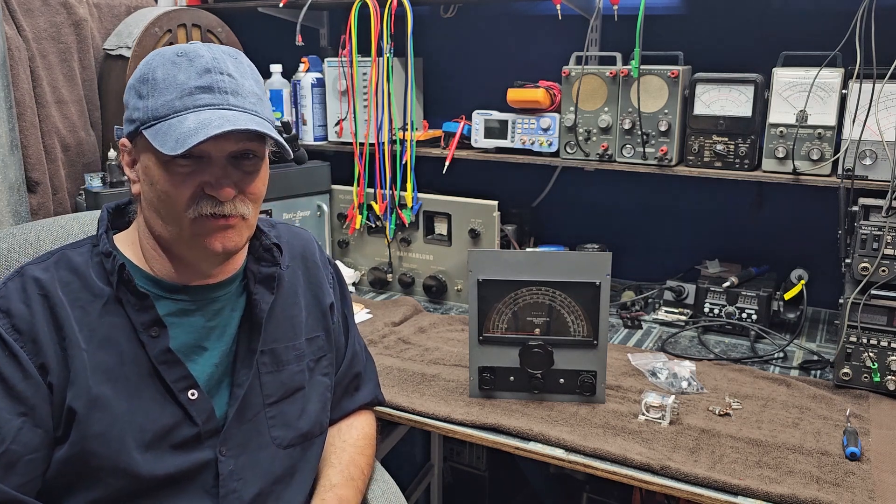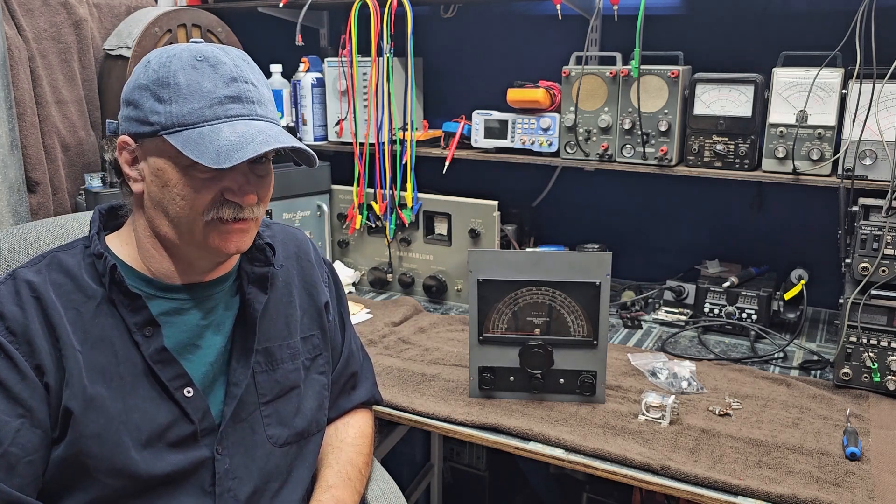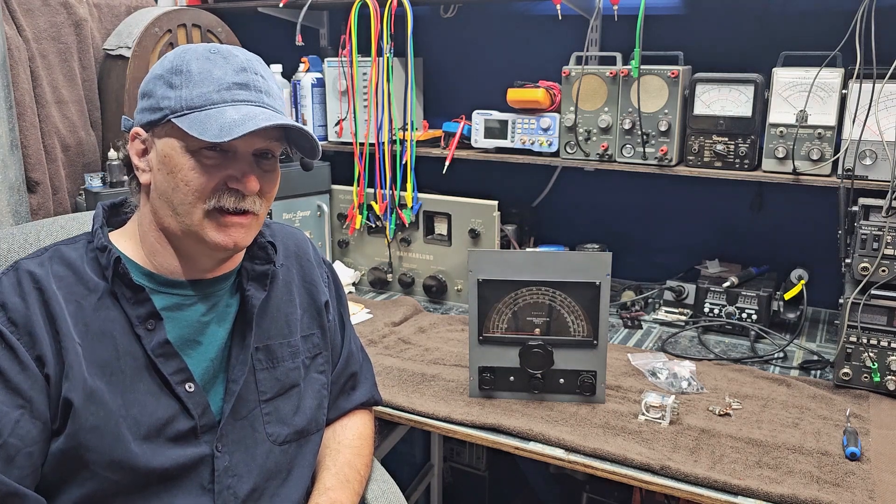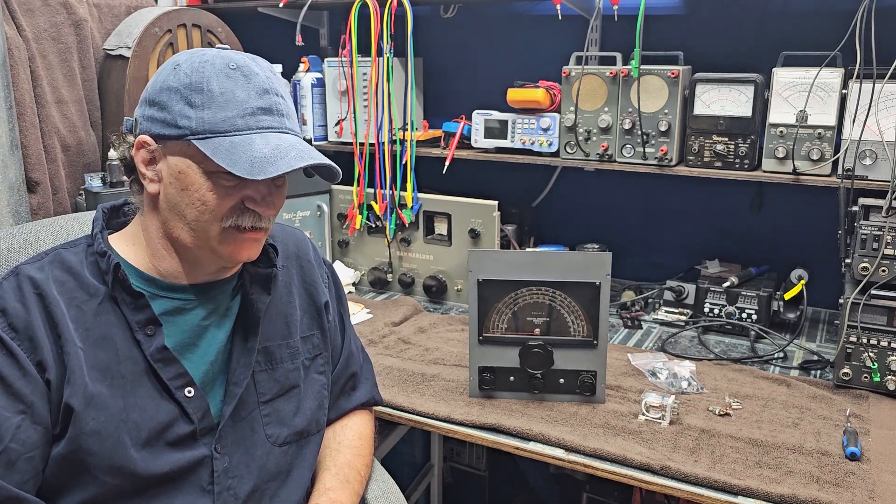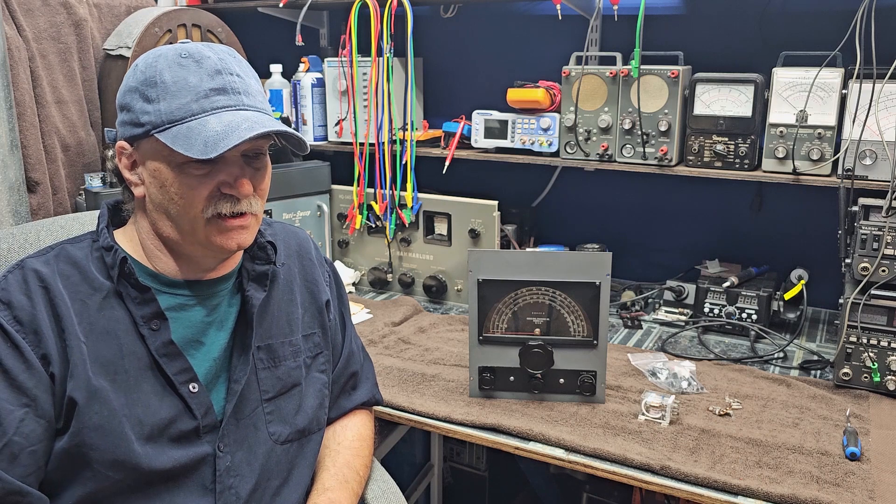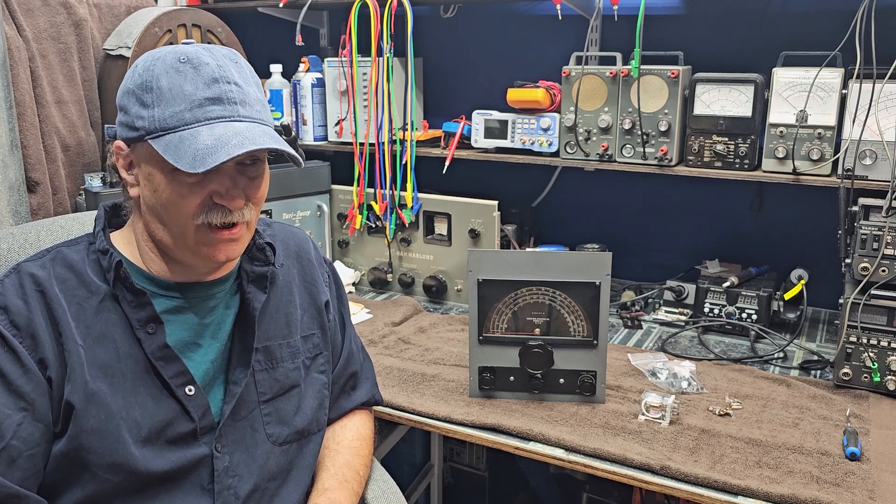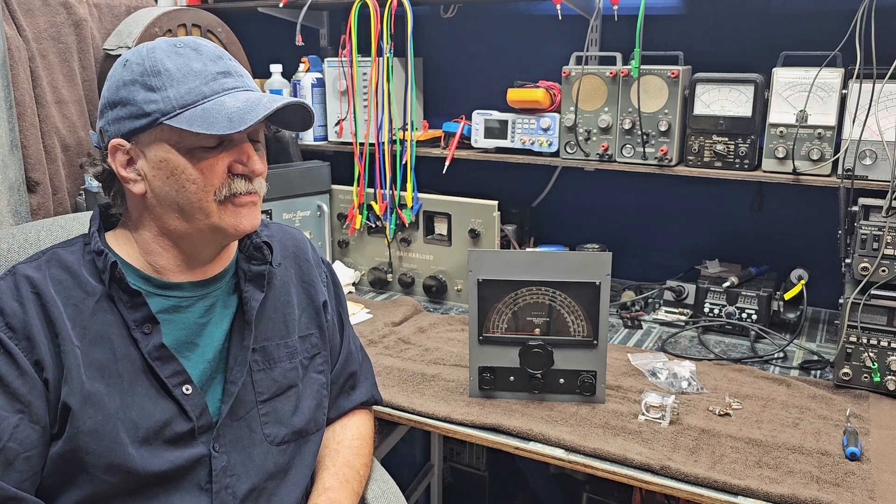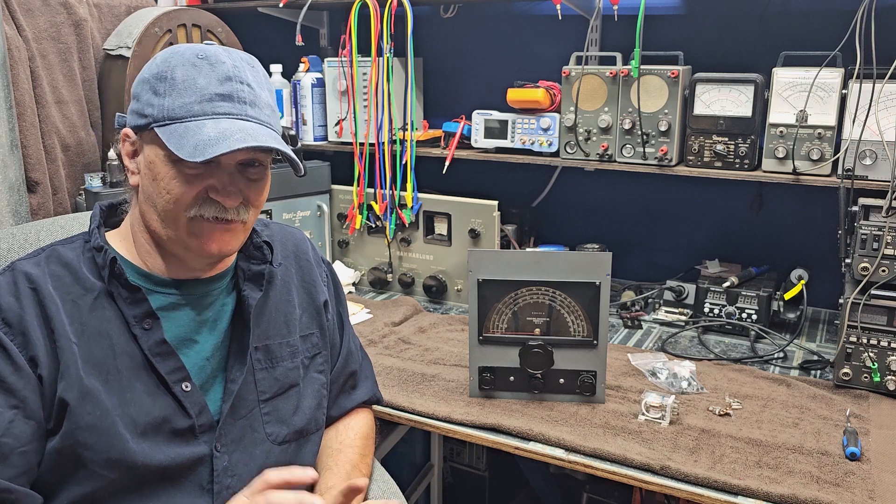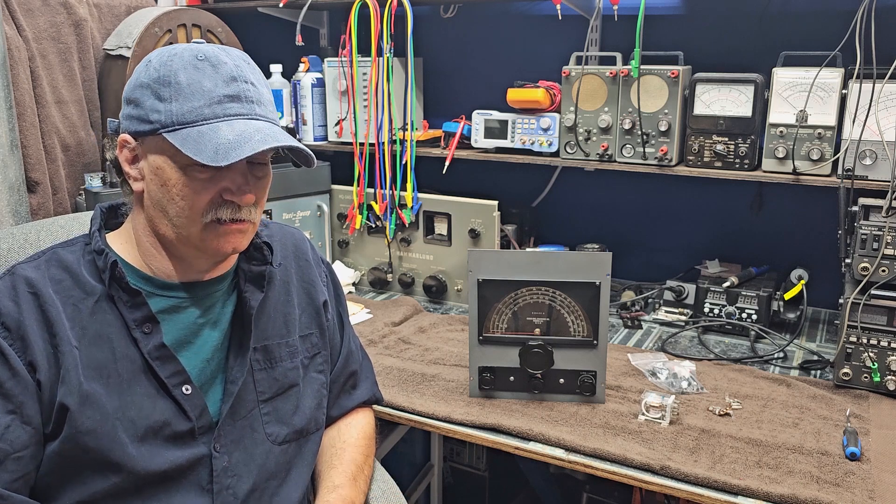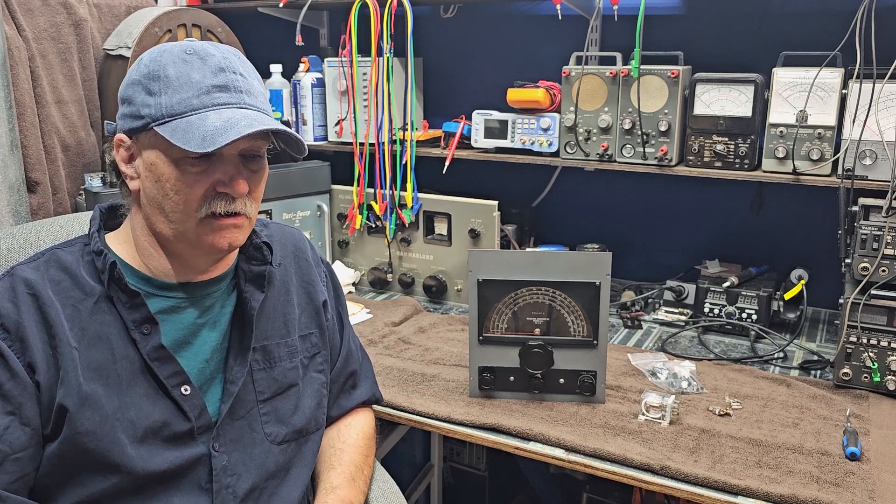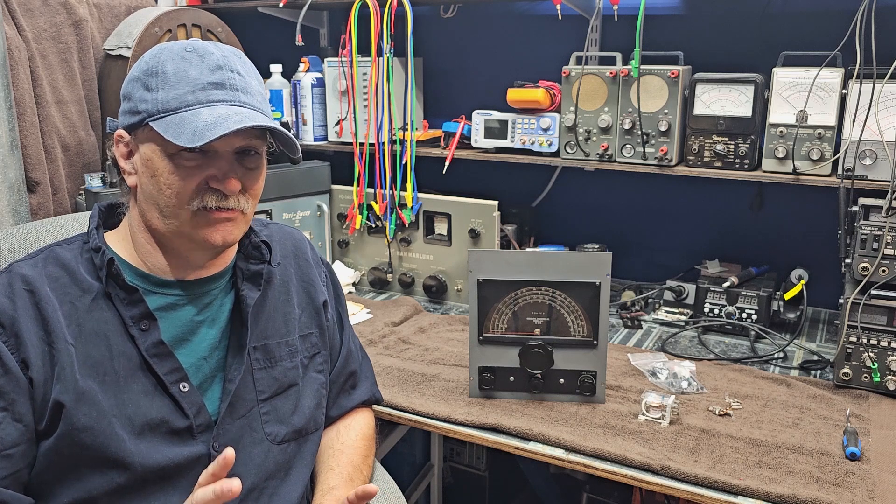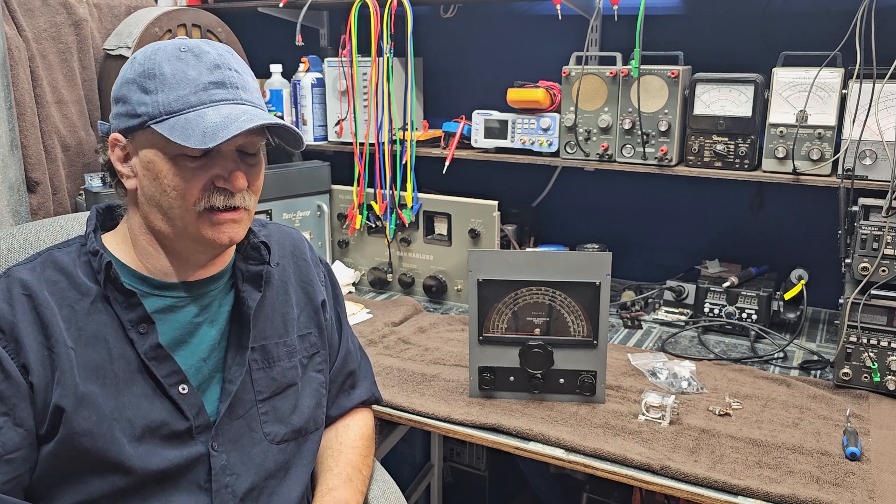This pre-selector goes in front of your receiver, so the antenna feeds into it and feeds back out to your receiver. It has quite an impact on the receiver. It acts as a little bit of an amplifier, so there's some gain there, but it increases the selectivity of your radio.